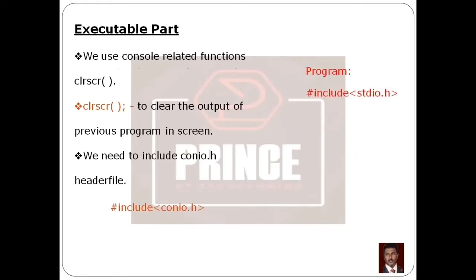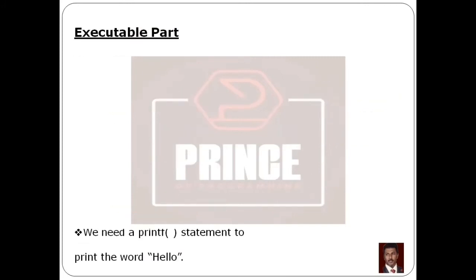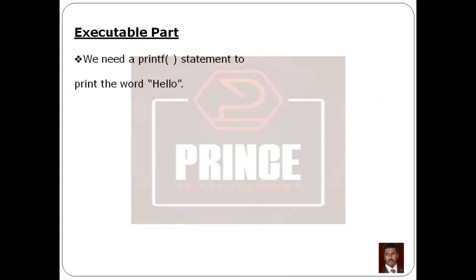To summarize the structure so far: in the preprocessor section there are two lines, then the main function, then left curly brace to begin the main function, then there is no local declaration section, then the clear screen function. The clear screen function uses parentheses and then a semicolon. After that, we print the output statement using printf.